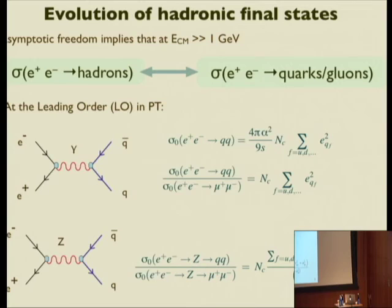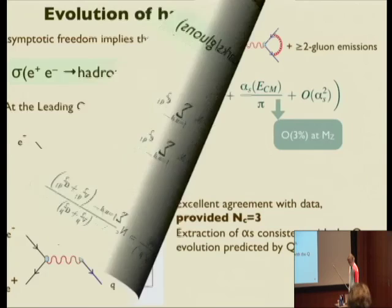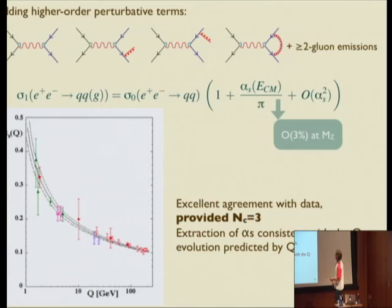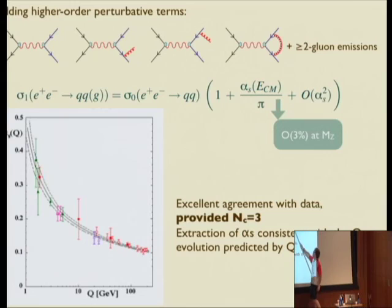If we replace quarks with muons we get the same expression up to the color factor and the quark charges, giving the famous R ratio. Around Z-pole energies this must be modified because the couplings of quarks and leptons to the Z differ from those to the photon. Going to higher orders in perturbation theory — including gluon emission from the final state or virtual gluon exchange — the cross-section changes by a term equal to alpha_s / pi. At the Z mass this is about a three percent correction.